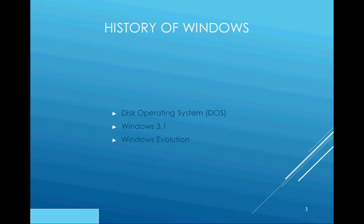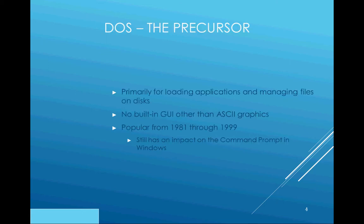We'll be looking at DOS and the Windows evolution. DOS, the precursor to where we are now, was primarily used for loading applications and managing files on disk. It had no built-in GUI — also pronounced 'gooey' — which stands for Graphical User Interface, other than ASCII graphics. It was popular from 1981 to 1999 and still has an impact on our command prompt in Windows today.